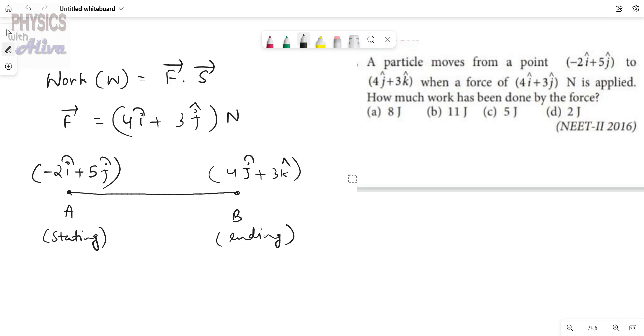This is the displacement vector, and the displacement vector equals the final minus the initial. The final position vector, 4j cap plus 3k cap, minus minus 2i cap plus 5j cap. From here we get 2i cap, 4 minus 5 that is minus 1j cap plus 3k cap. This is the displacement vector.